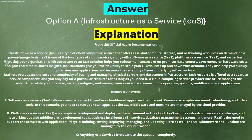Explanation: Infrastructure as a Service is a type of cloud computing service that offers essential compute, storage, and networking resources on demand on a pay-as-you-go basis. IaaS is one of the four types of cloud services, along with Software as a Service, Platform as a Service, and Serverless. Migrating your organization's infrastructure to an IaaS solution helps you reduce maintenance of on-premises data centers, save money on hardware costs, and gain real-time business insights.